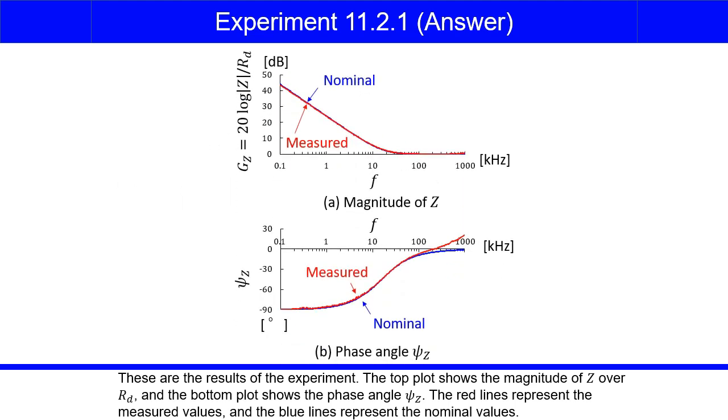These are the results of the experiment. The top plot shows the magnitude of Z over RD, and the bottom plot shows the phase angle psi Z. The red lines represent the measured values, and the blue lines represent the nominal values.